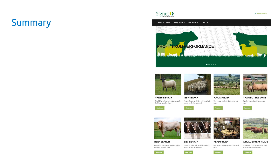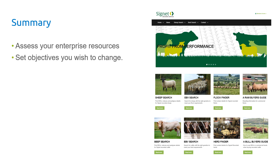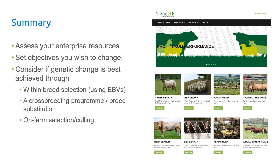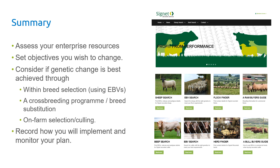To summarise: assess your enterprise resources — what you do well and what you want to improve. Set some breeding objectives, think about what's best improved through genetics, and then decide how to change those genetics — whether selecting within a breed using EBVs, bringing in a new breed through crossbreeding, or selecting on farm. Finally, record how your program is going so you can monitor it over time to see if traits are changing in the right direction. For more information, head to the Signet website where further notes on breeding strategies are available.